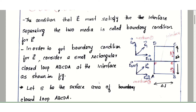To get that boundary condition for E, consider a small rectangular closed loop ABCDA at the interface as shown in the figure. We have two mediums separated by an interface — medium 1 and medium 2. The two mediums are separated from the interface and we consider electric field E1 at medium 1.